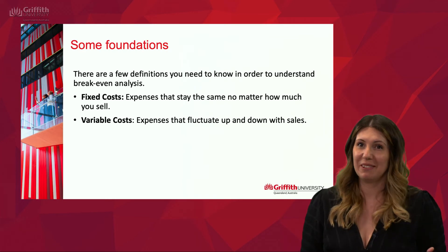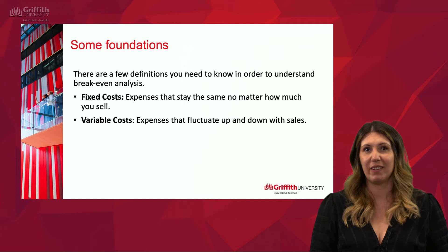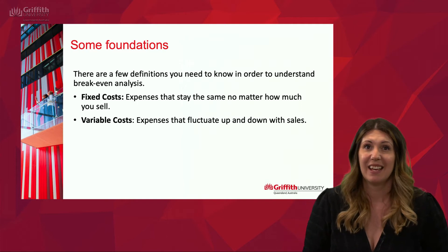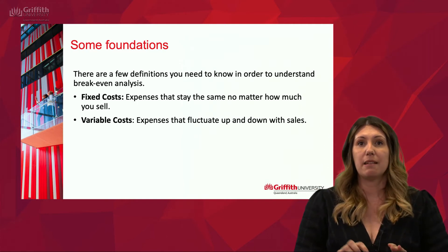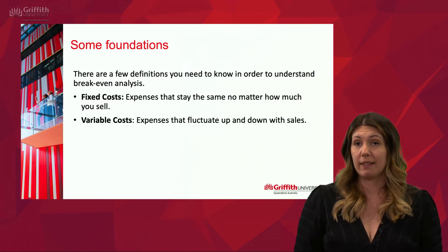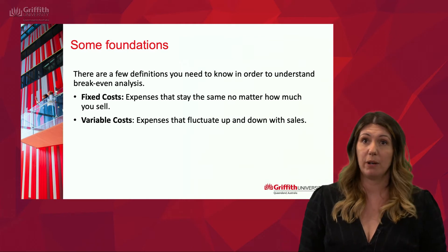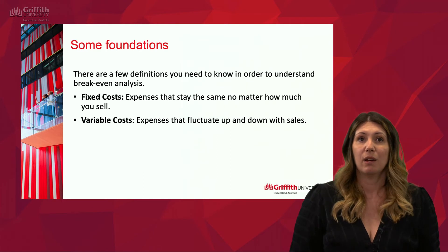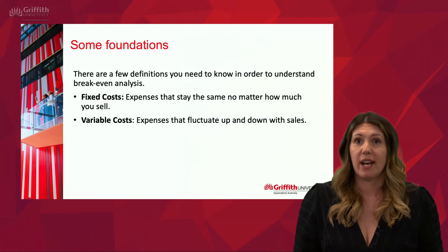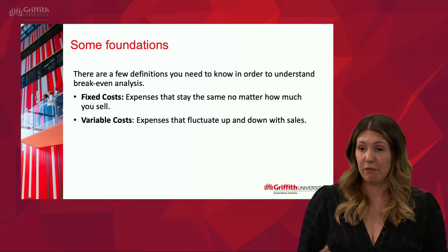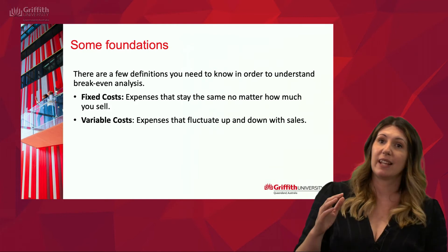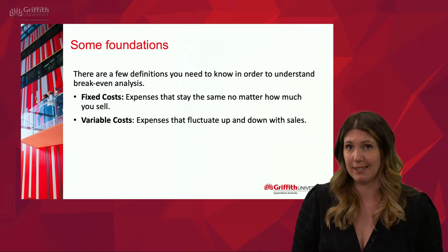Before jumping into the calculation with your students, it's important to teach them some foundations — specifically fixed costs and variable costs. Fixed costs are expenses that stay the same no matter how many products or services you sell; rent is a good example because it doesn't change whether you sell five products or twenty. Variable costs are expenses that fluctuate up and down — for example, if you sell dresses, shipping costs only apply when you actually sell units, so that cost fluctuates depending on how many you sell.